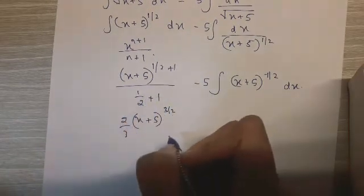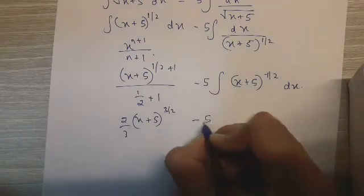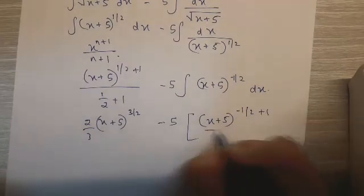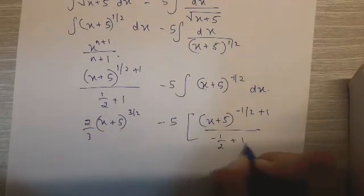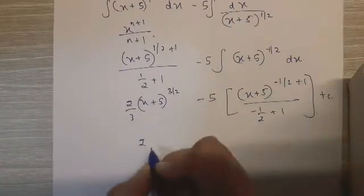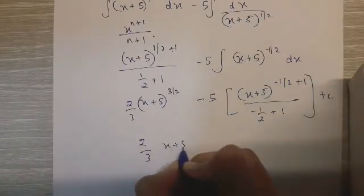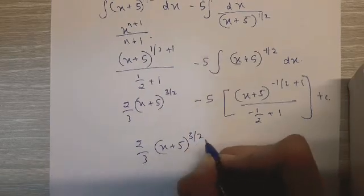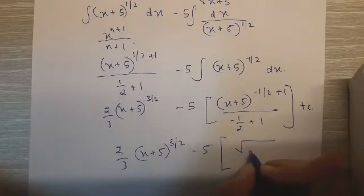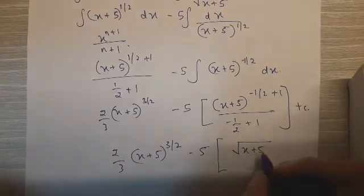Minus 5 times x plus 5 raised to minus 1/2 plus 1, upon minus 1/2 plus 1, plus c. Minus 5 here, so 1 minus 1/2 is 1/2 again. So we have root x plus 5 in the numerator upon 1/2 in the denominator, plus c.